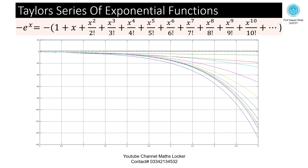Taylor series of exponential functions. Here, negative e raised to the power x equals negative bracket of: 1 plus x plus x squared over 2 factorial plus x cubed over 3 factorial plus x to the power 4 over 4 factorial, and so on. This function continues to infinity.